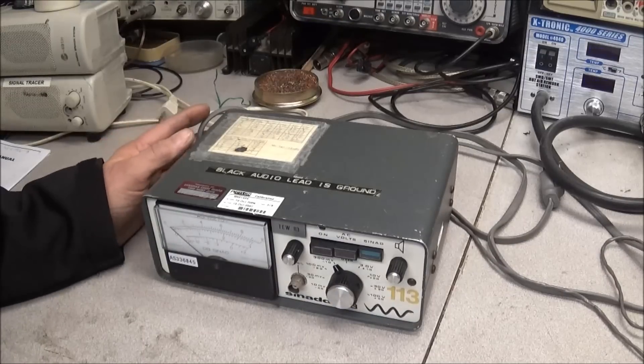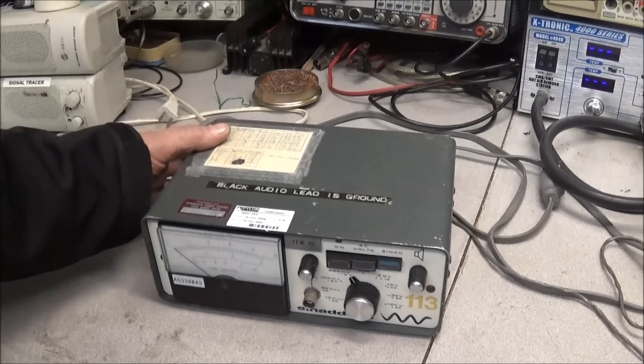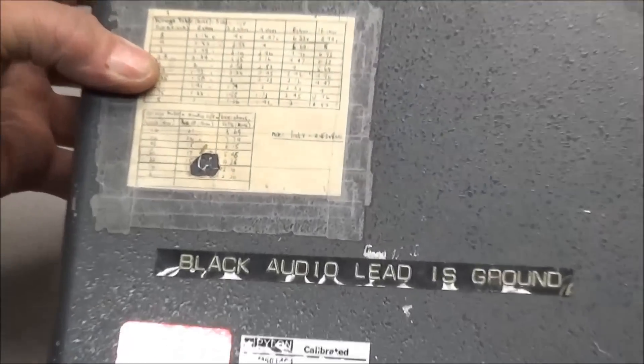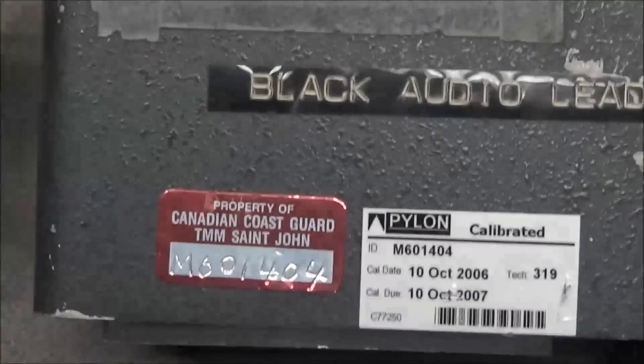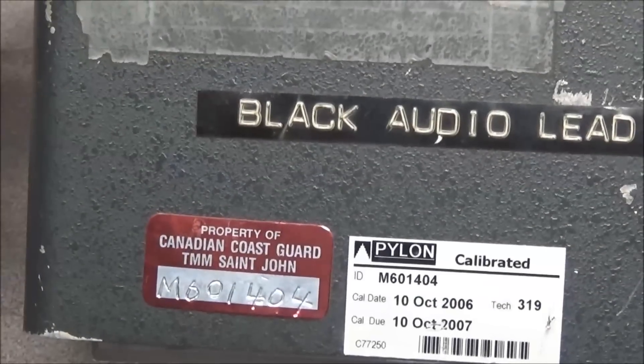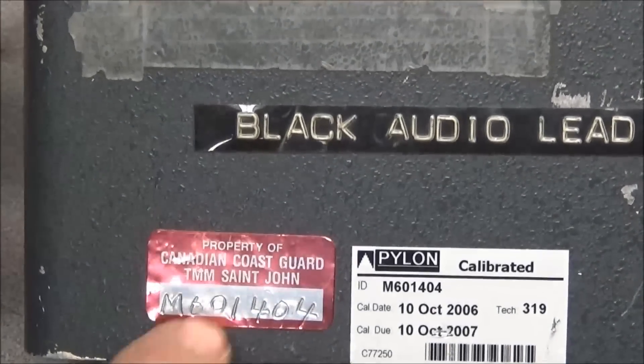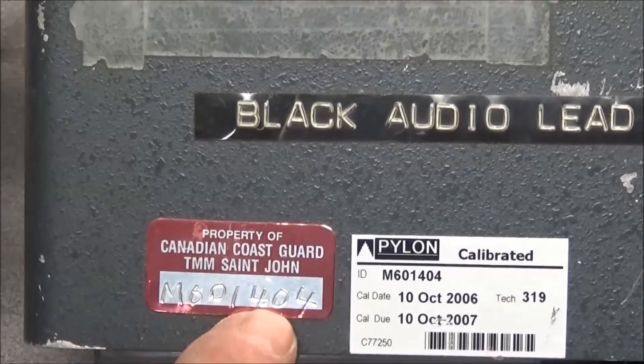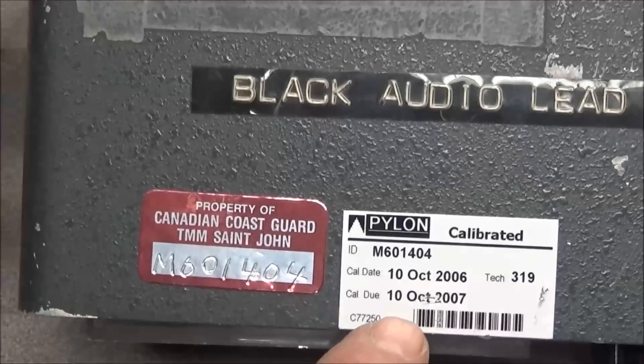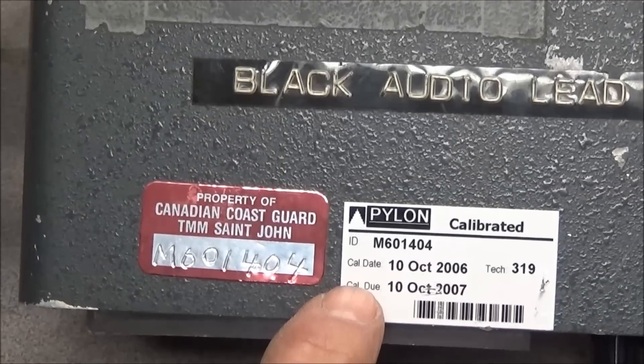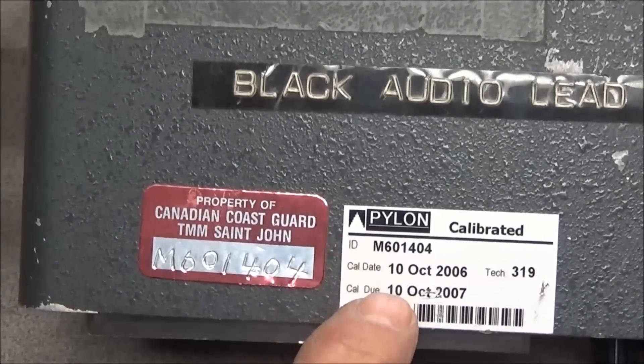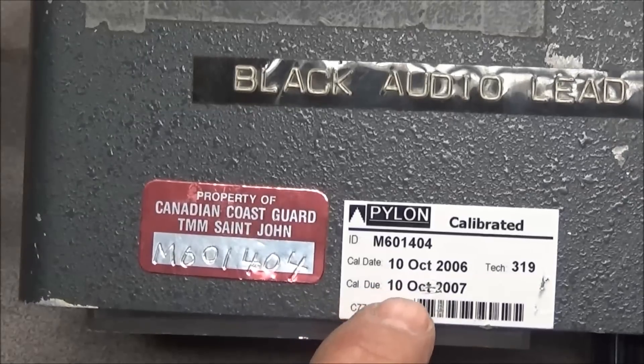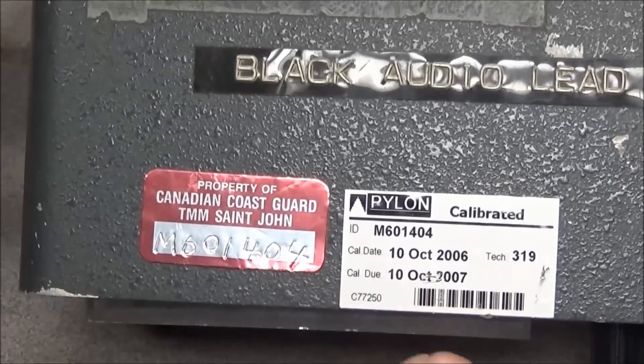As we can see, this one here, look at the top of it, get the glare off of it. I got a lot of lights on in here today, but it was property of the Canadian Coast Guard TMM St. John's. They have the serial number on it, has a calibration sticker on it, and the last calibration pylon was calibrated on 10th of October 2006 and it was good for the 10th of October 2007.